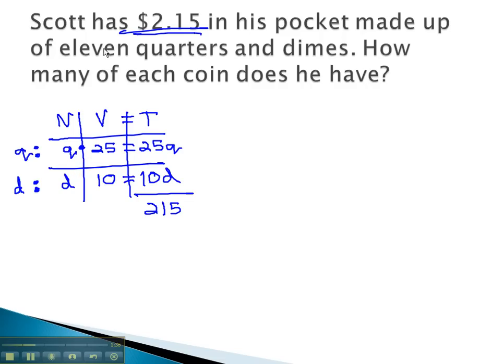We're also given the information that there are 11 coins total. This is the number of coins. Number is the first column. There's a total of 11 coins there.